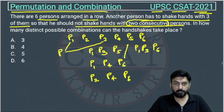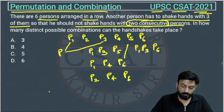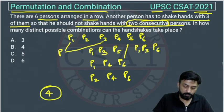Then he will shake hands with P5, but there is no other person. So these are the only possible cases. How many cases are there? First, second, third, four. So there are four possibilities. The answer is option B.